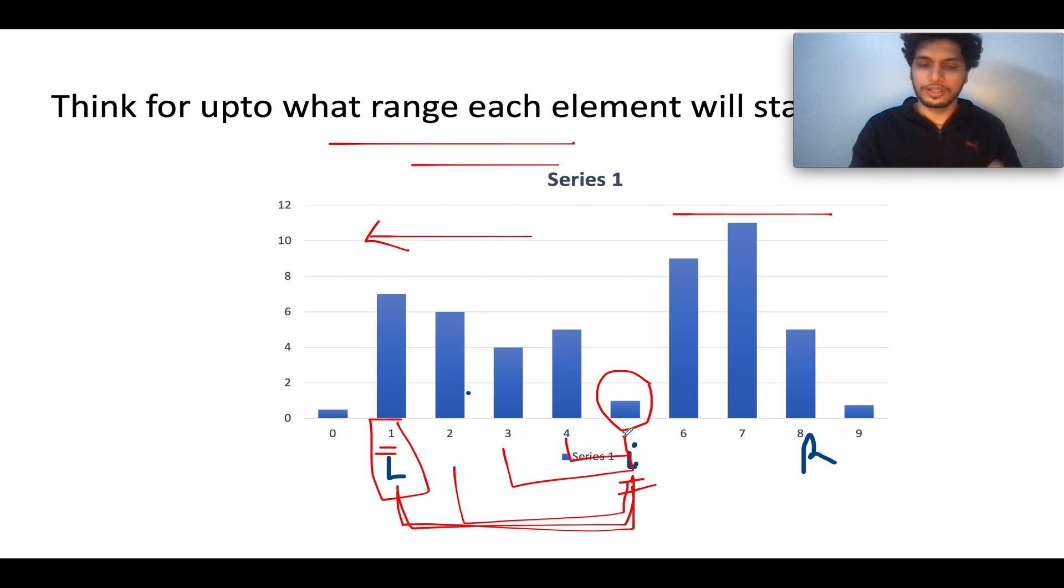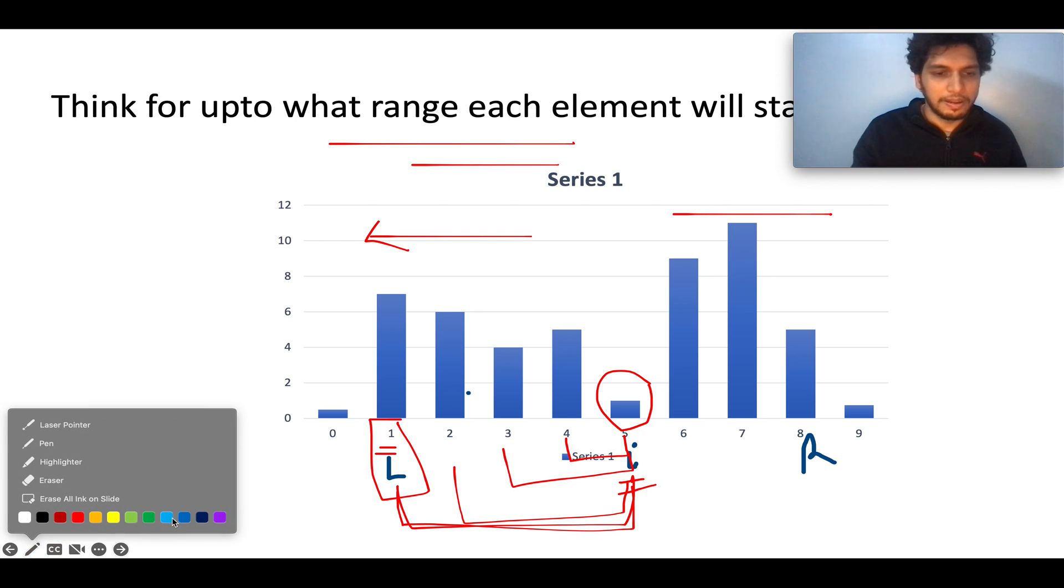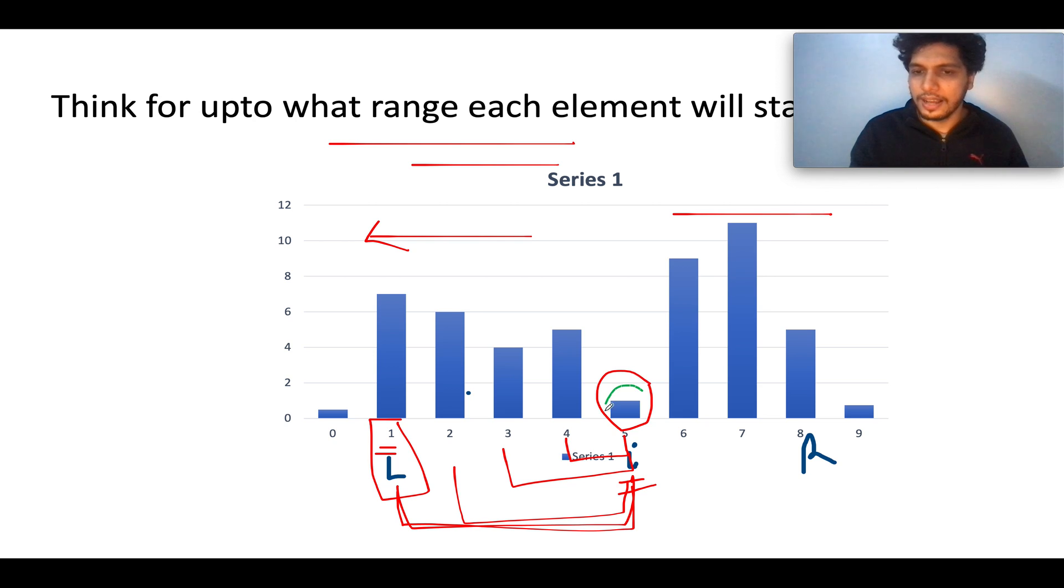Similarly, we look for the same thing towards the right and identify the range up till which the current element will act as the minimum one. Six is greater than five, seven is again greater than five, eight is again greater than five. At ninth index, we see a lower value, so this element at the ith index is acting as the minimum one up to eighth index. So this is the range, and you can see three subarrays.